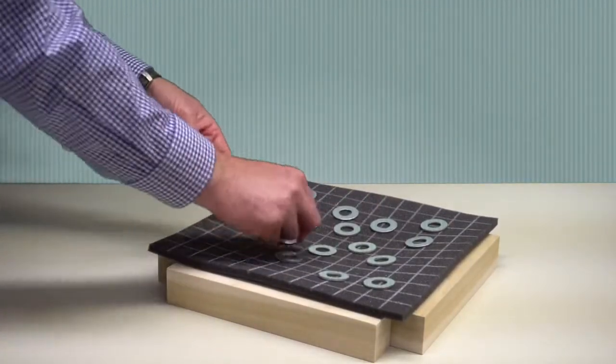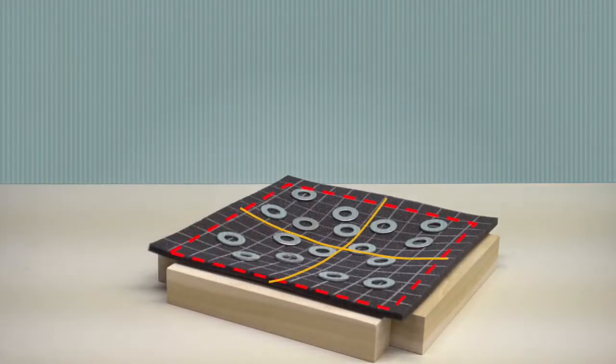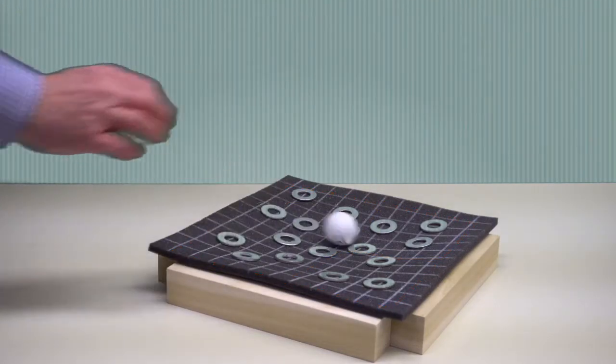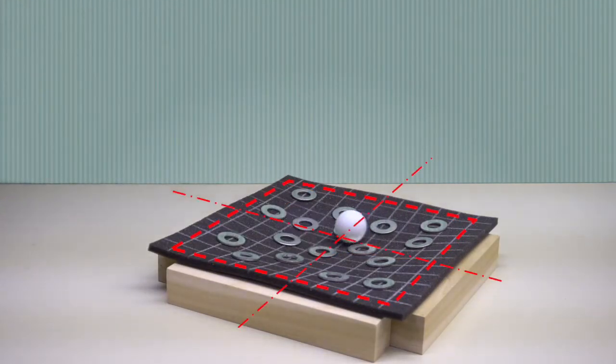As you can see, the curvature is positive, like a smile, everywhere and in both directions. You can also see that the maximum deflection occurs at the center of the plate.